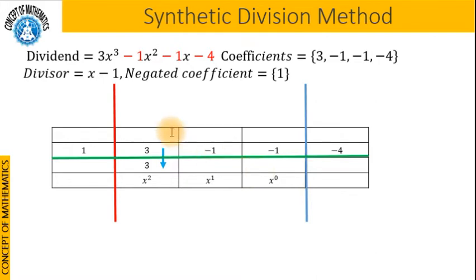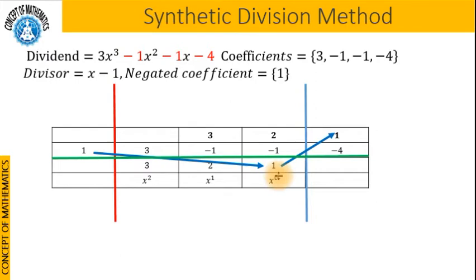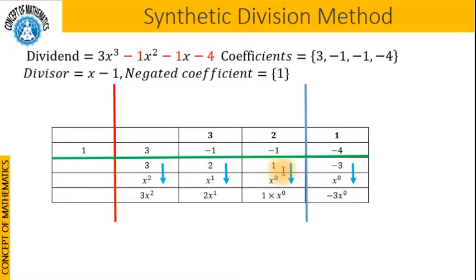Now bring down the leading coefficient of the dividend, which is 3, without any operation. Then multiply 3 by 1 and place the result just above the next coefficient. Add 3 and negative 1 to get positive 2. Now multiply 2 by 1 to get 2. Then add 2 and negative 1 to get positive 1. Again multiply 1 by 1 to get 1 and write it above the next coefficient. Then add those quantities to get negative 3. These are the coefficients of our quotient, and this last value is the coefficient of the remainder.